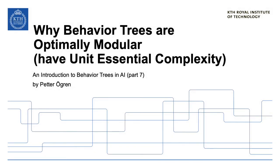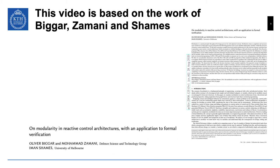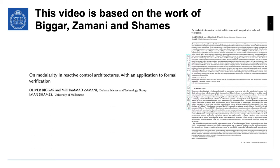Hello! In this video we're going to see why behavior trees are optimally modular in the sense of having unit essential complexity. This video is based on the work of Bigar, Zamani and Shames, who are working at the Defense Science and Technology Group and the University of Melbourne. This is a very nice paper and it's available on Archive.